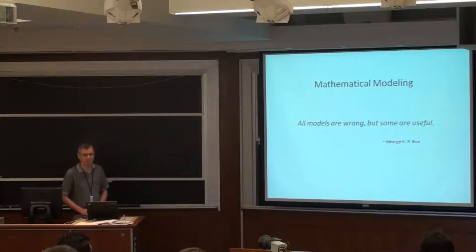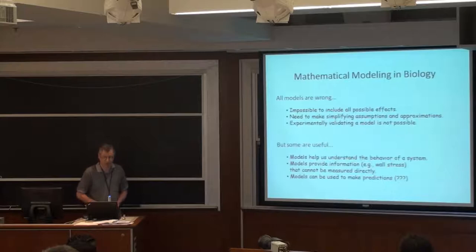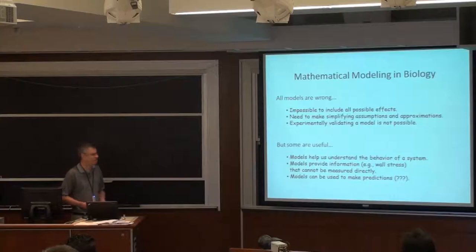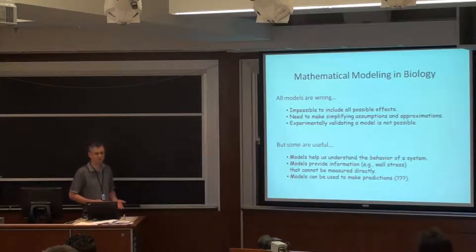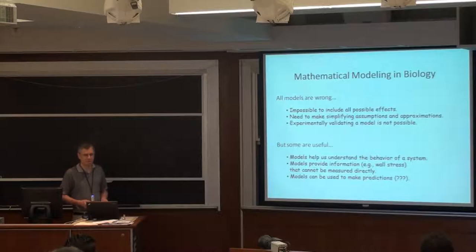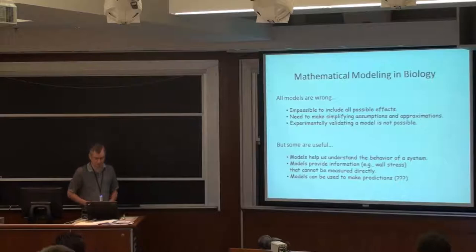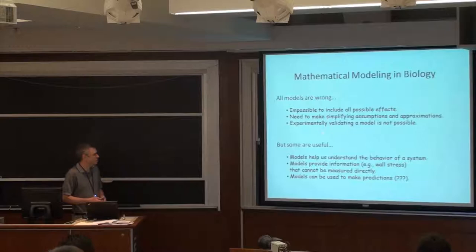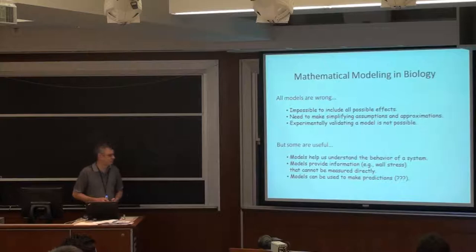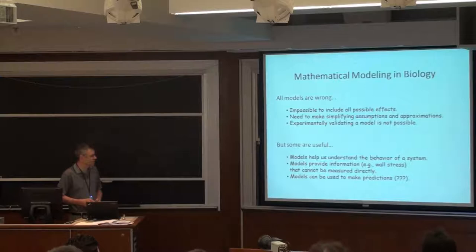Now, as the statistician George Box said, all models are wrong, but some are useful. This is particularly true in modeling of biological systems. Why are all models wrong? Because in biology, it's impossible to include all possible effects, so you have to make simplifying assumptions and approximations. A lot of people talk about validating a model, but really you can't validate a model. The best you can do is test it — you can test it a million times, and maybe the next time it will prove it wrong.